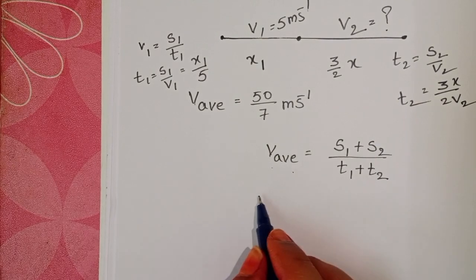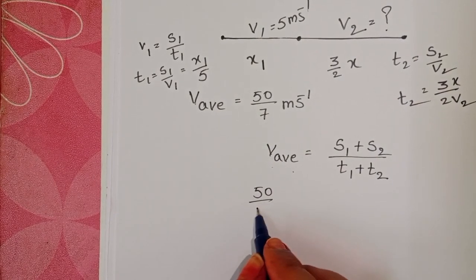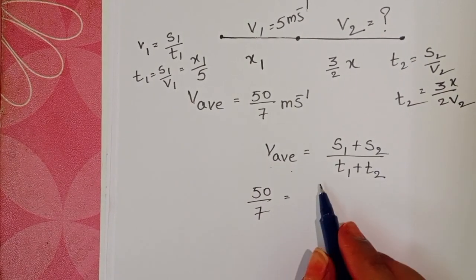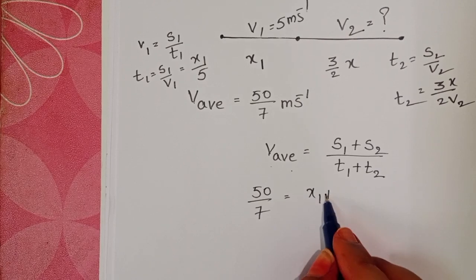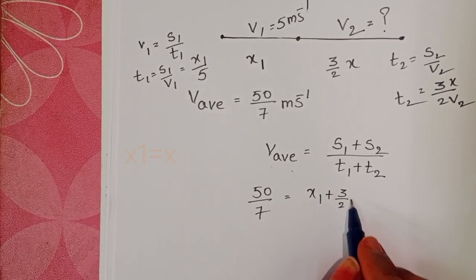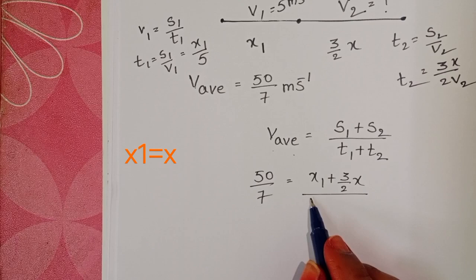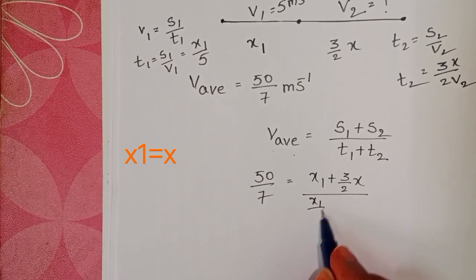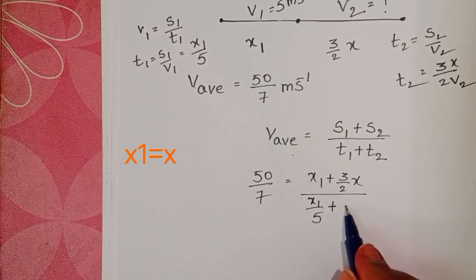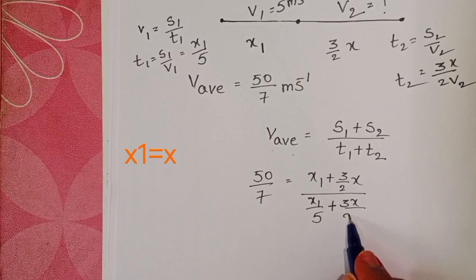Average velocity is 50 by 7. s1 equals x and s2 is 3 by 2 x. t1 value is x by 5 plus t2 is 3x by 2v2.